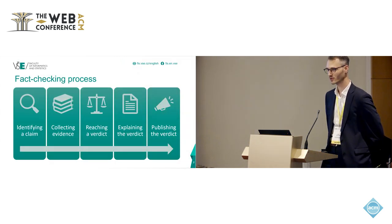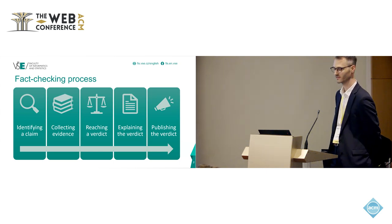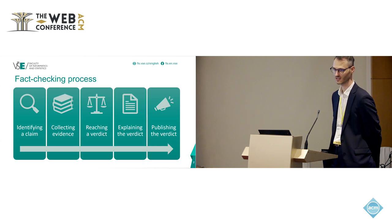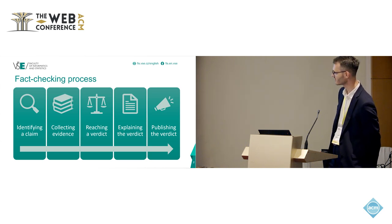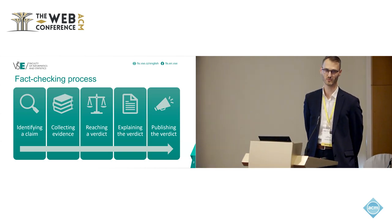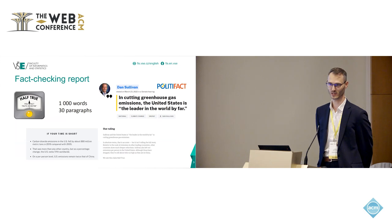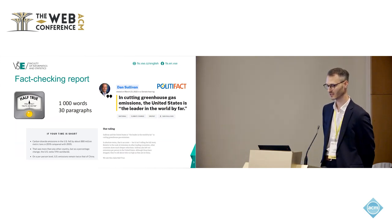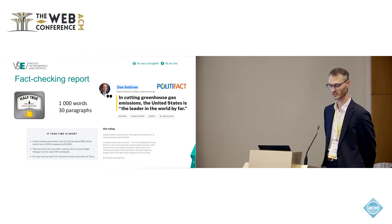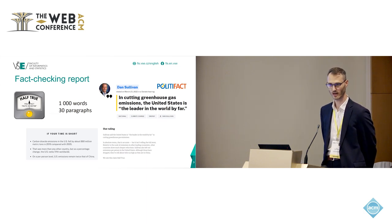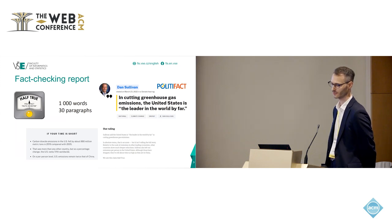Let me remind you how fact-checkers usually work. They start with identifying a claim, then collecting the evidence, reasoning, building argumentation, then reaching a verdict and also trying to explain the verdict to the audience, and then publishing it. One example report from PolitiFact has the claim that in cutting greenhouse gas emissions, the United States is the leader in the world by far. This fact-check has 1,000 words, more than 30 paragraphs. At the bottom left, you can see the ruling, which is the end part of the fact-checking report that summarizes the claim and the main argument for the verdict.